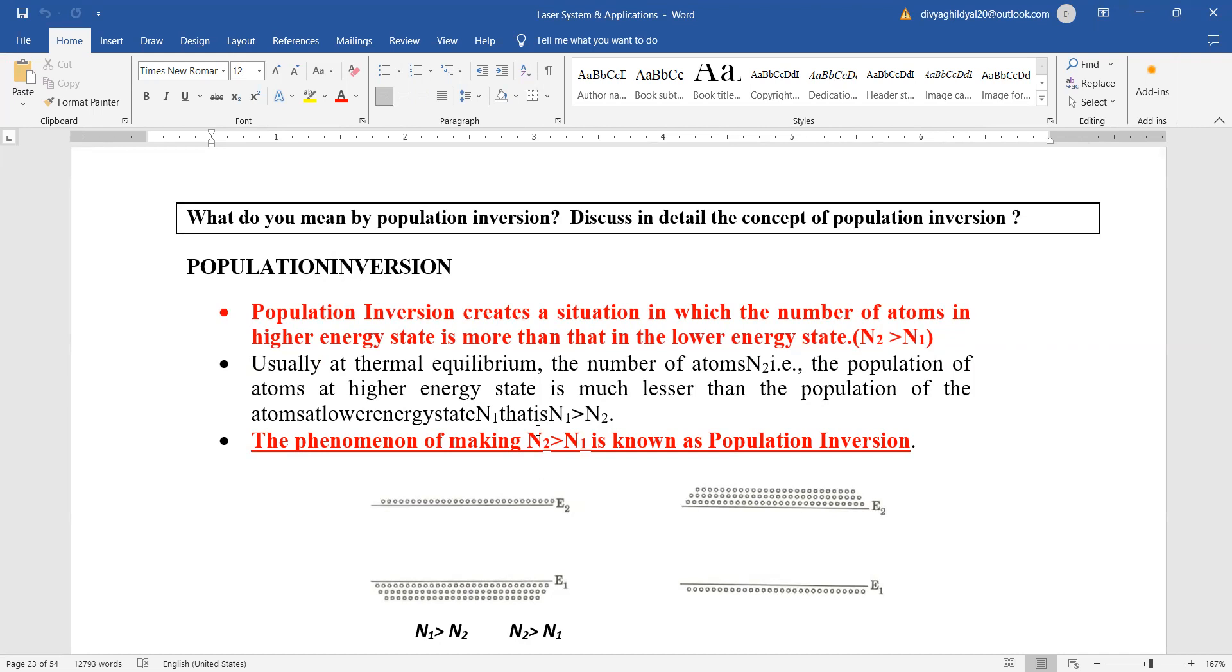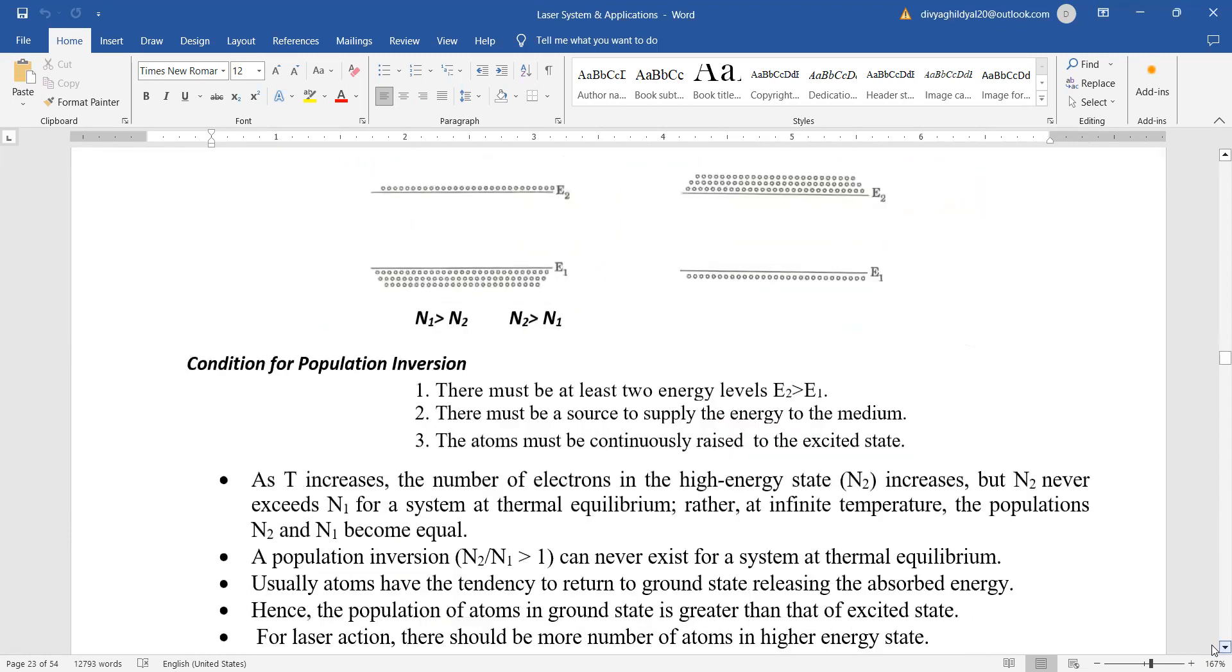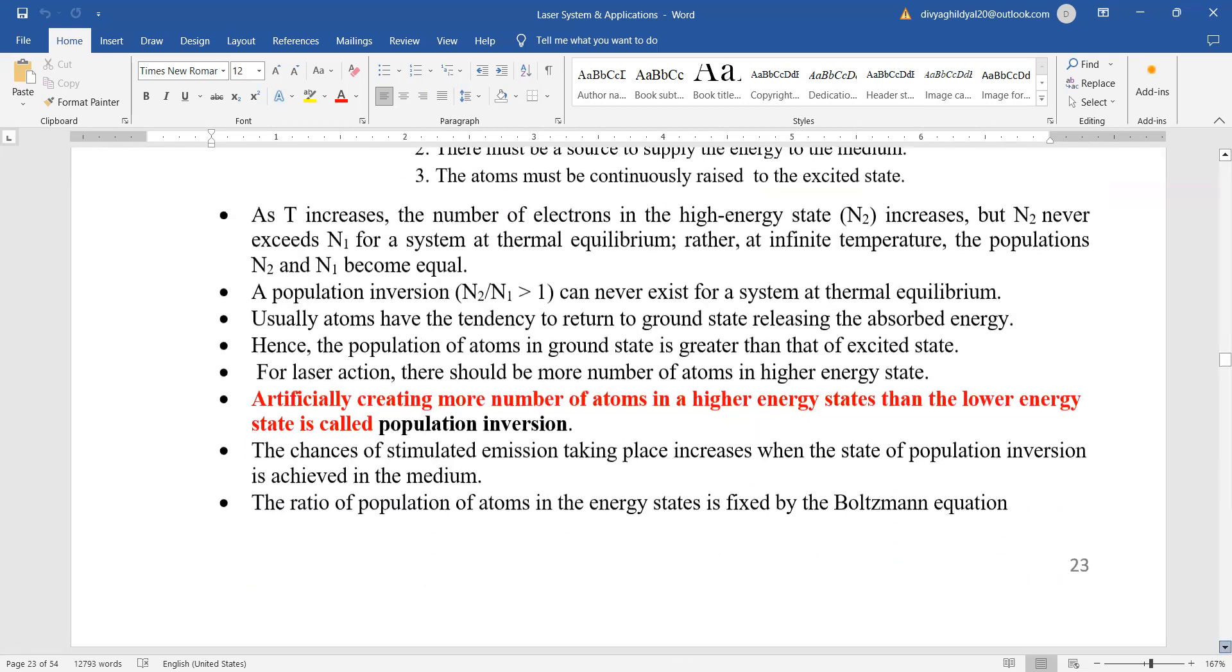So this is known as population inversion. You can see in this diagram here also, this is a very necessary condition to achieve laser action. In order to have population inversion, there must be at least two energy levels. And obviously a source to supply energy to the medium.